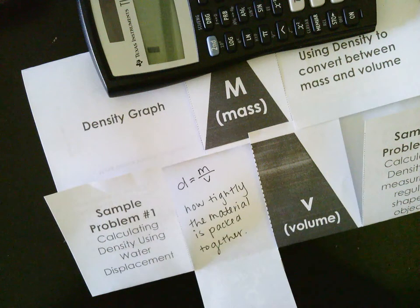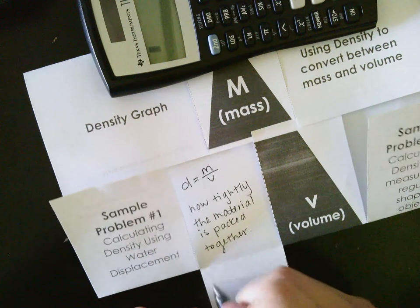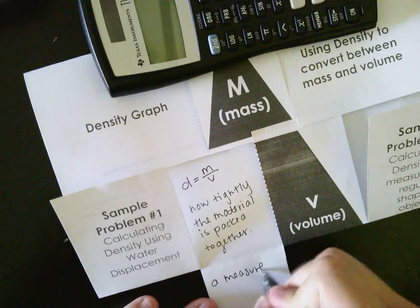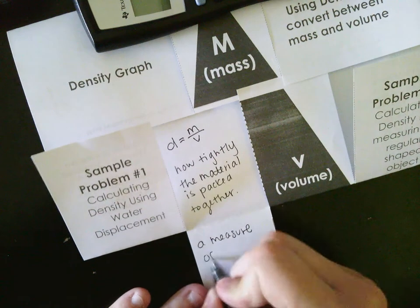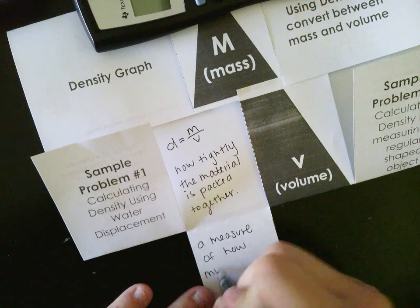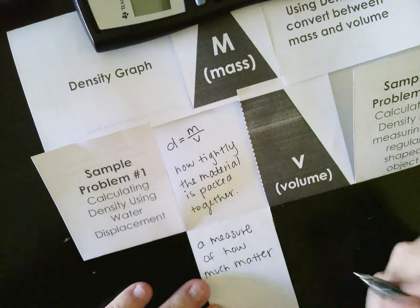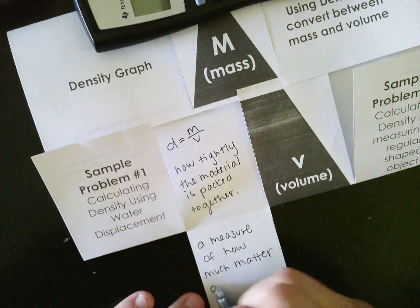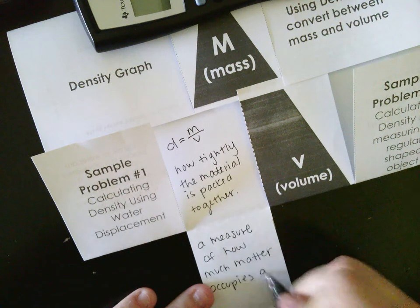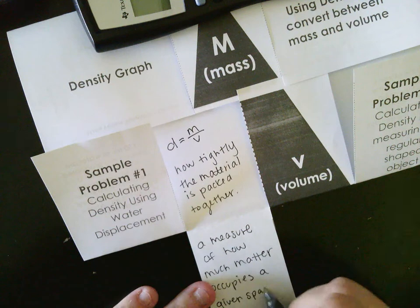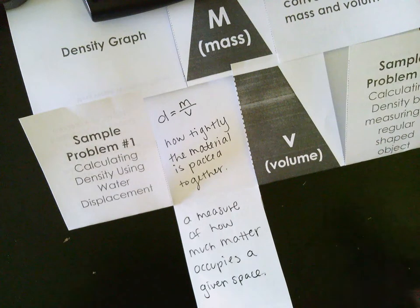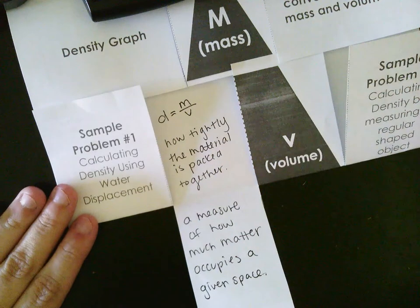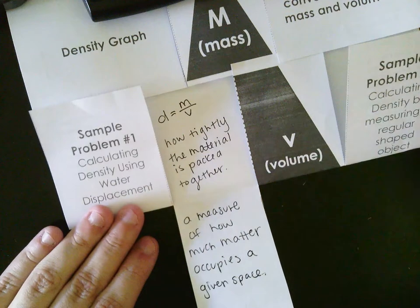Another way we could think about this is that density is a measure of how much matter occupies a given space. If you have trouble reading my handwriting or anything, pull up that PowerPoint — you can watch the video and look at the PowerPoint at the same time. So this is the basics about density. Let's dig a little bit deeper into what that actually means.